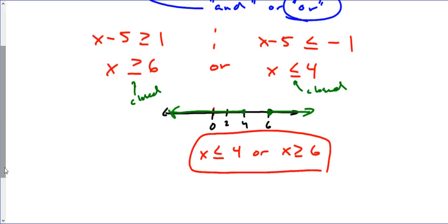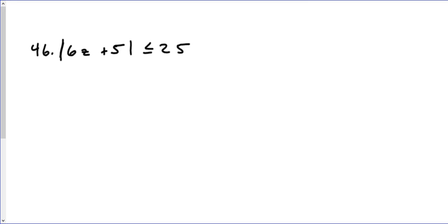That's how you solve these. We're going to go through another one. This next problem is another inequality — in this case the absolute value is less than the value of 25, which is greater than the absolute value expression. Unlike the OR statement, this is what we refer to as the AND statement.